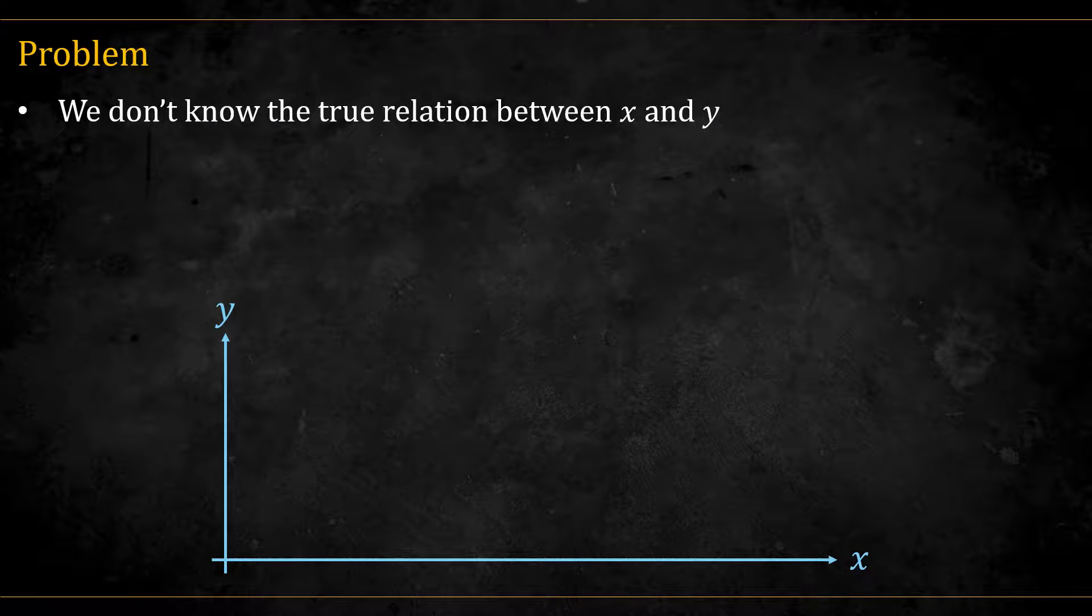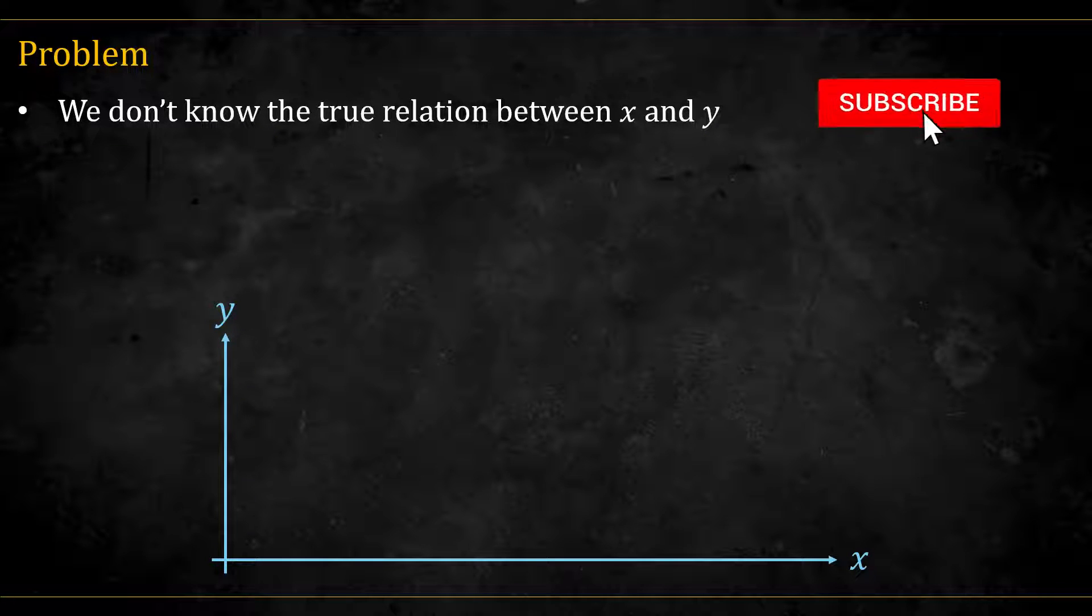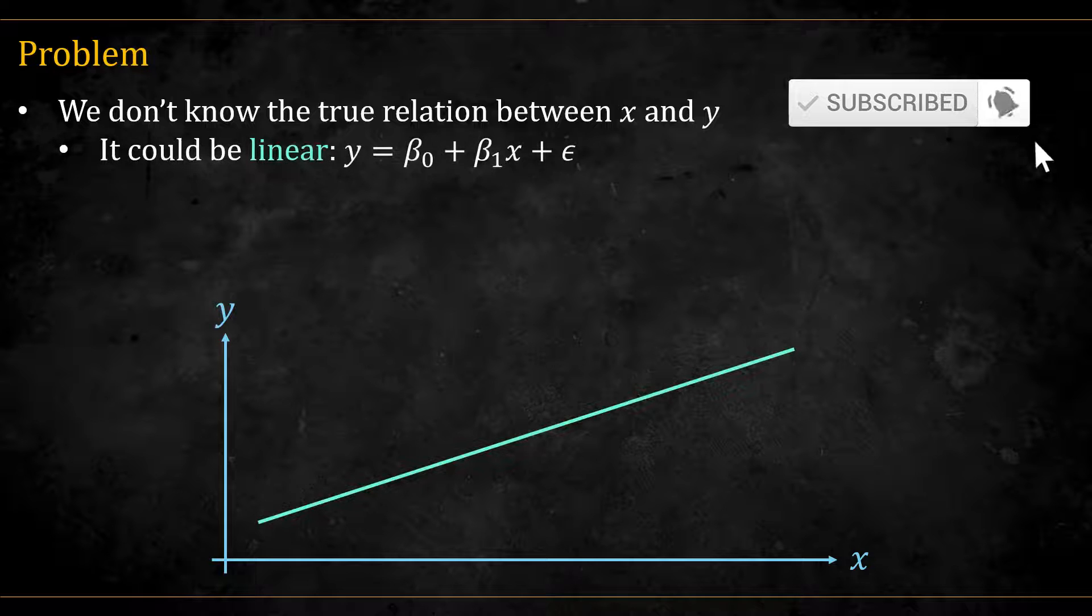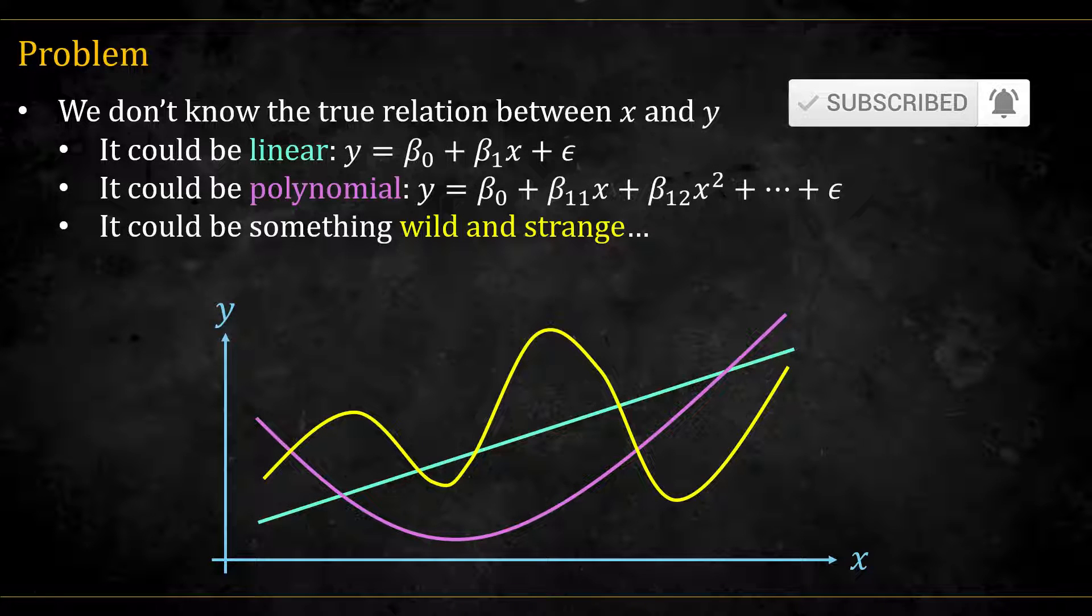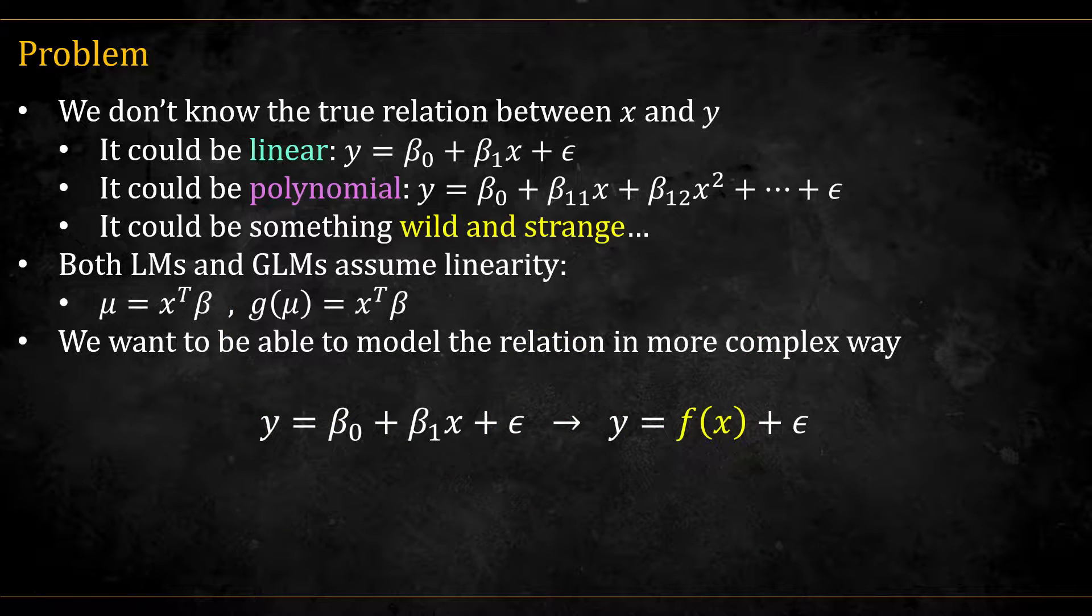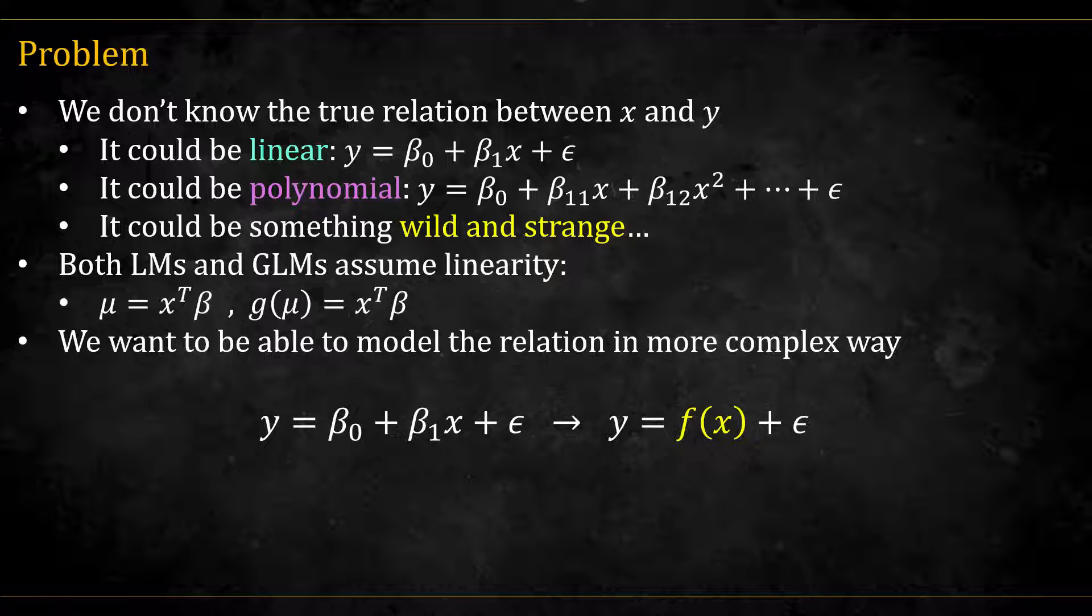The problem is that we don't know the true relation between x and y. It could be linear. It could be polynomial. But it could be anything, really. Both LMs and GLMs assume linearity. What we want now is a way to model more complex structures, which we'll denote by this f of x.